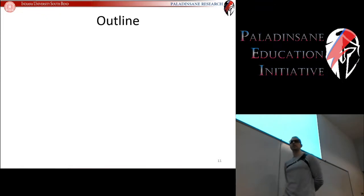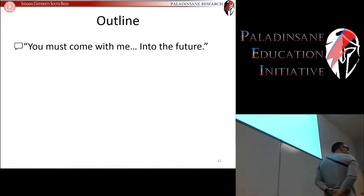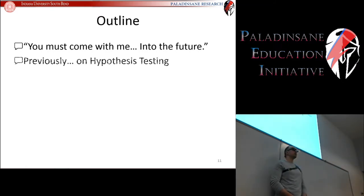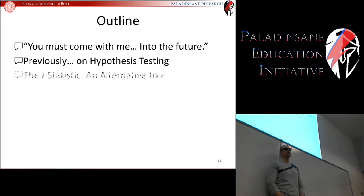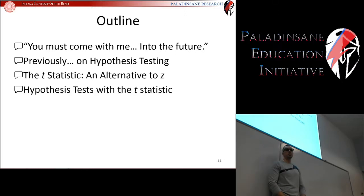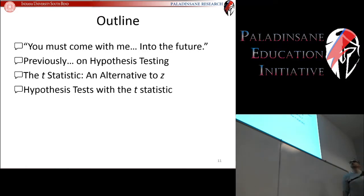So what are we going to encounter today specifically? First, we're going to have a little bit of foreshadowing about a very important change coming up in our course. Then we're going to take a brief recap of hypothesis testing. We're going to introduce a t-statistic, which is an alternative to the z-statistic we've been using — it's so close that it's kind of a blink-and-you'll-miss-the-difference situation. Then we're going to go through a hypothesis test with the t-statistic.